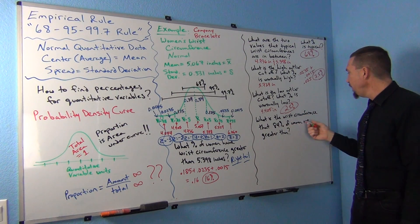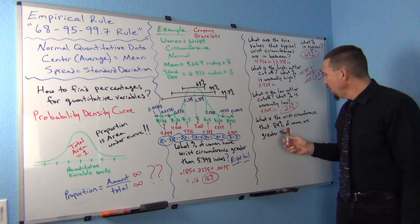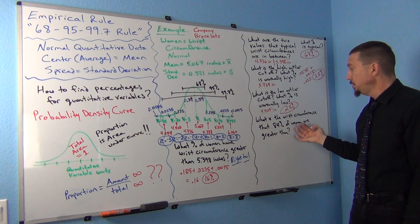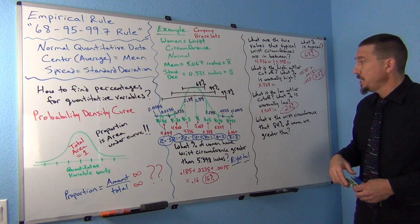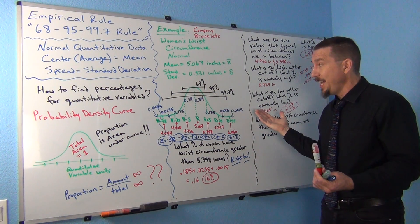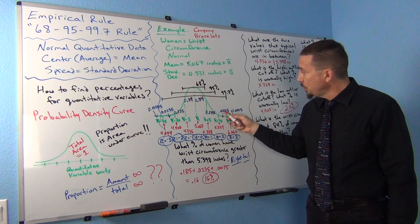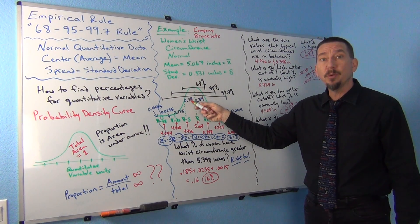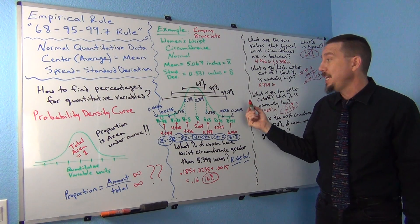What's the wrist circumference that 84% of women are greater than? This is going to be a little tricky. So again, less than, think left tail; greater than, think right tail. In this case, we're looking for 84% is greater than, so the right tail percentage has to be 84%. Well, if you add these up, 16% plus 34% would be 50%, plus another 34% would be 84%. In other words, the top five sections add up to 84%.